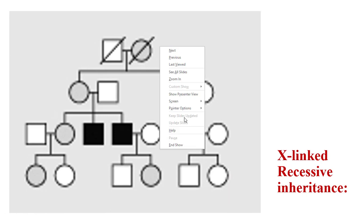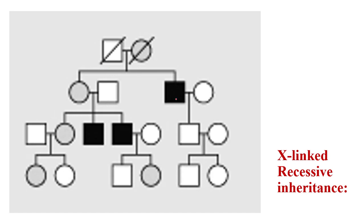This is an example pedigree — how we decide whether it is X-linked recessive or some other mode. First, we look for a generation skip: across the four generations there is a skip, so this is recessive. Next, we look for sex biasness: only males are affected — these three individuals are male — so this is X-linked recessive.